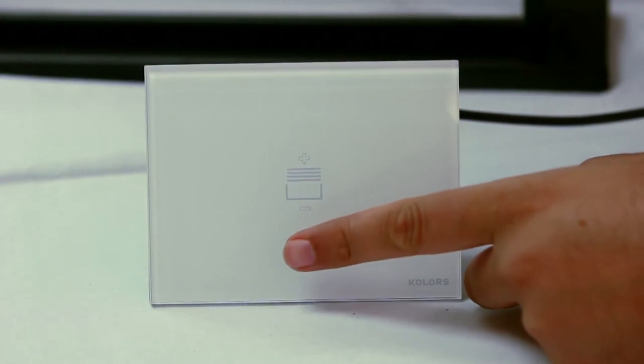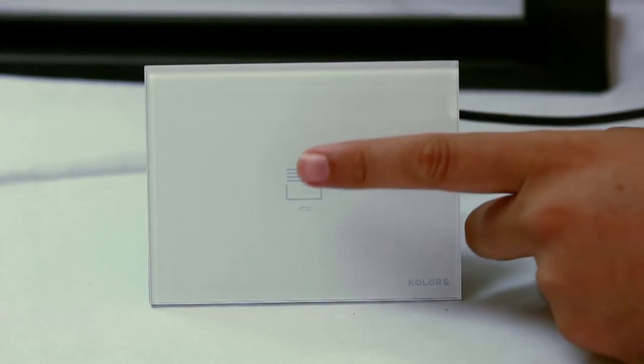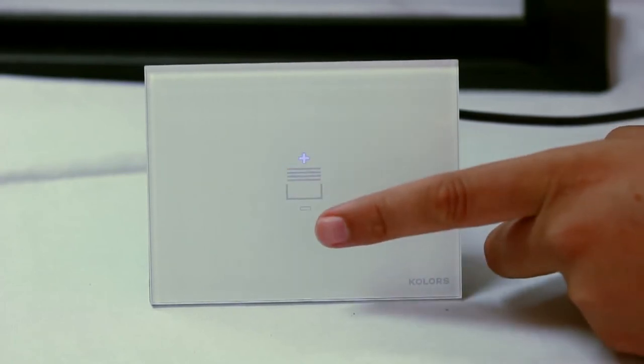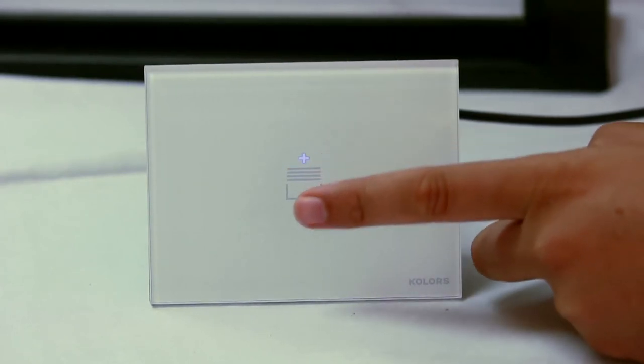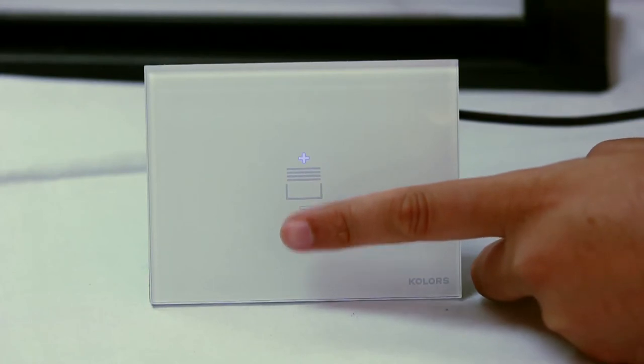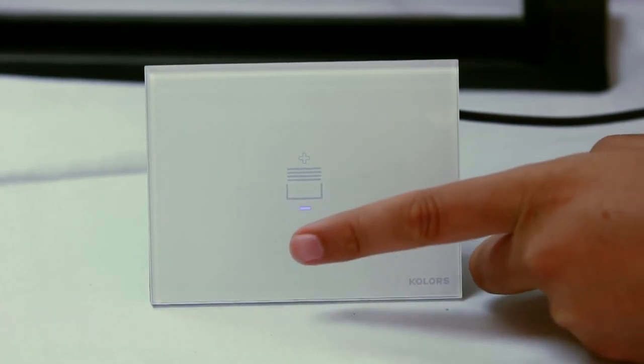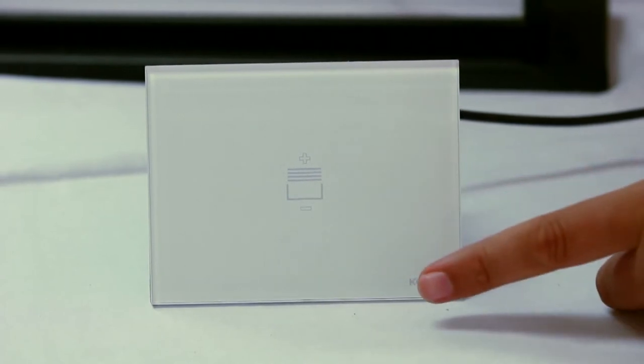Similarly, in controller for motorized curtains or blinds, by touching the plus and minus sign symbols, the direction of curtain movement is controlled. If one wants to stop the motor in between, one needs to touch the symbol which is operating.